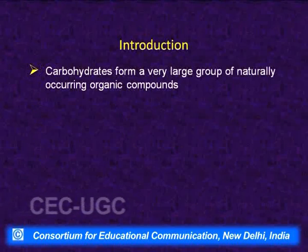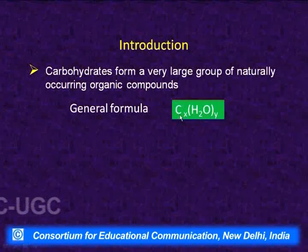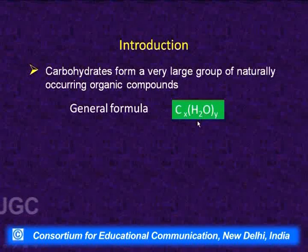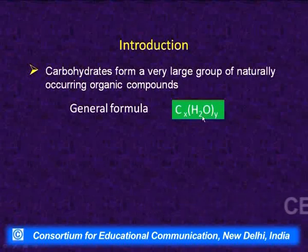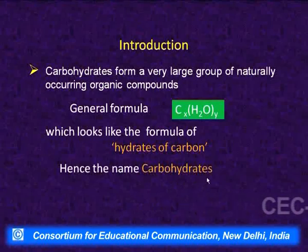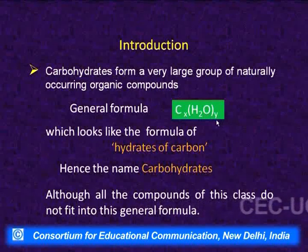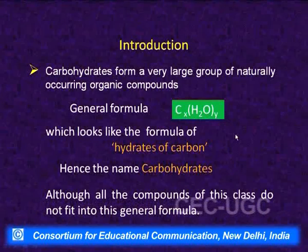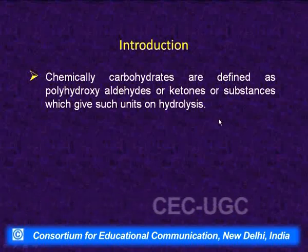Carbohydrates form a very large group of naturally occurring organic compounds. The general formula was found to be Cx(H2O)y. Based on this formula, the name 'carbohydrate' was given because it indicates they are hydrates of carbon. Although not all compounds fit this formula, the name is retained for the class. Chemically, on the basis of functional groups, they are defined as polyhydroxy aldehydes or ketones.